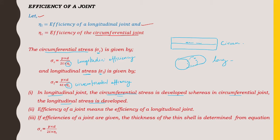The efficiency of a joint means that if the efficiency of longitudinal joint is given, the thickness of the thin shell is determined from the equation: σc = p·d / (2·t·ηl) for circumferential stress.